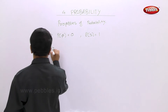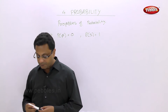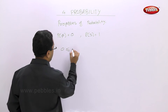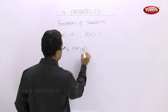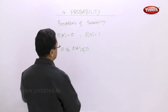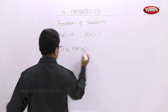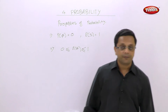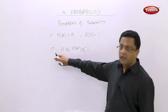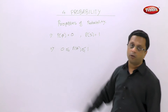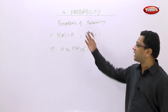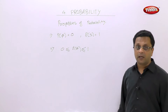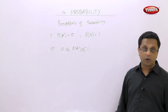The second property says: the probability of an event always lies between 0 and 1, both inclusive. If it is a null set or null event, then it will be 0. If the event is equivalent to your sample space, then it will be equal to 1. But generally, if it is not equal to the sample space, the probability lies between 0 and 1.